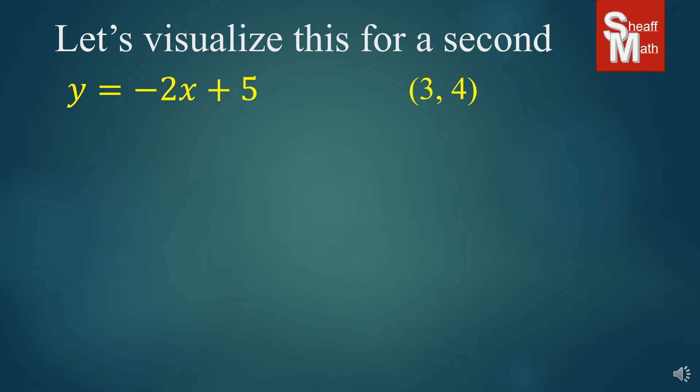There's our equation and our point. What we have here is this line right here represents y equals negative 2x plus 5. And 3, 4 is a point that's not on that line, right there, the red point. What we're looking for is the equation of the line that is parallel to the first one but goes through that point. So we want to find the equation for that dotted line.